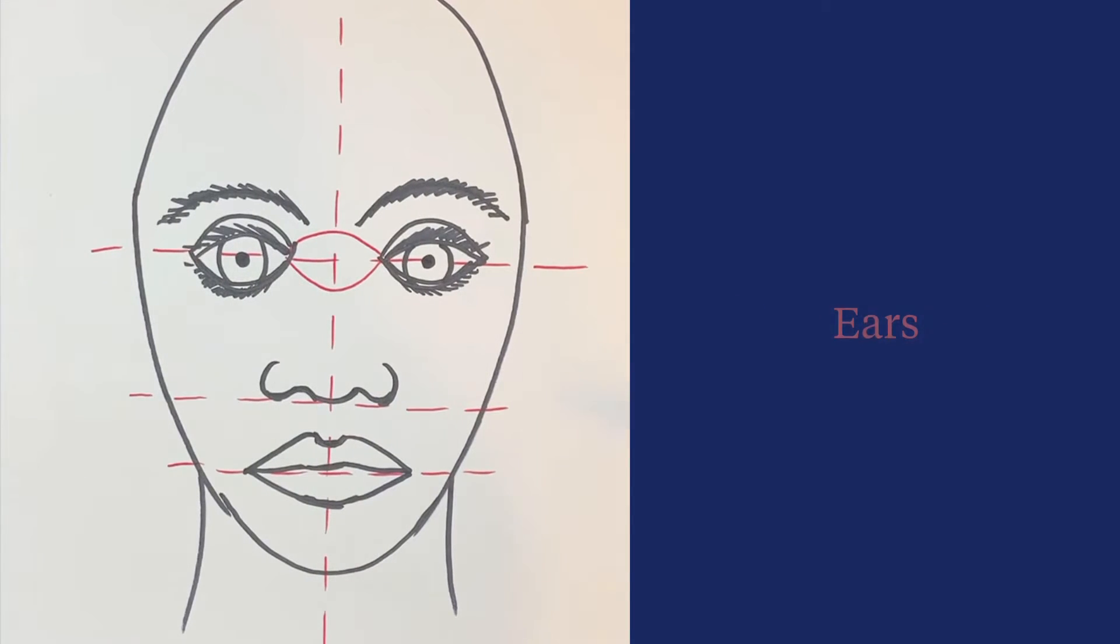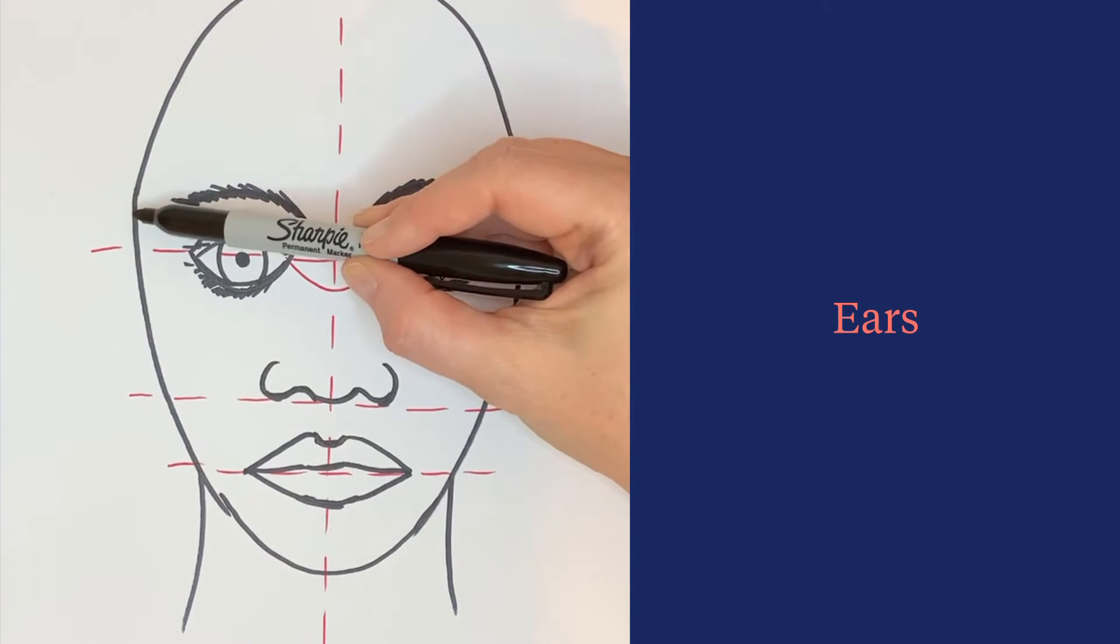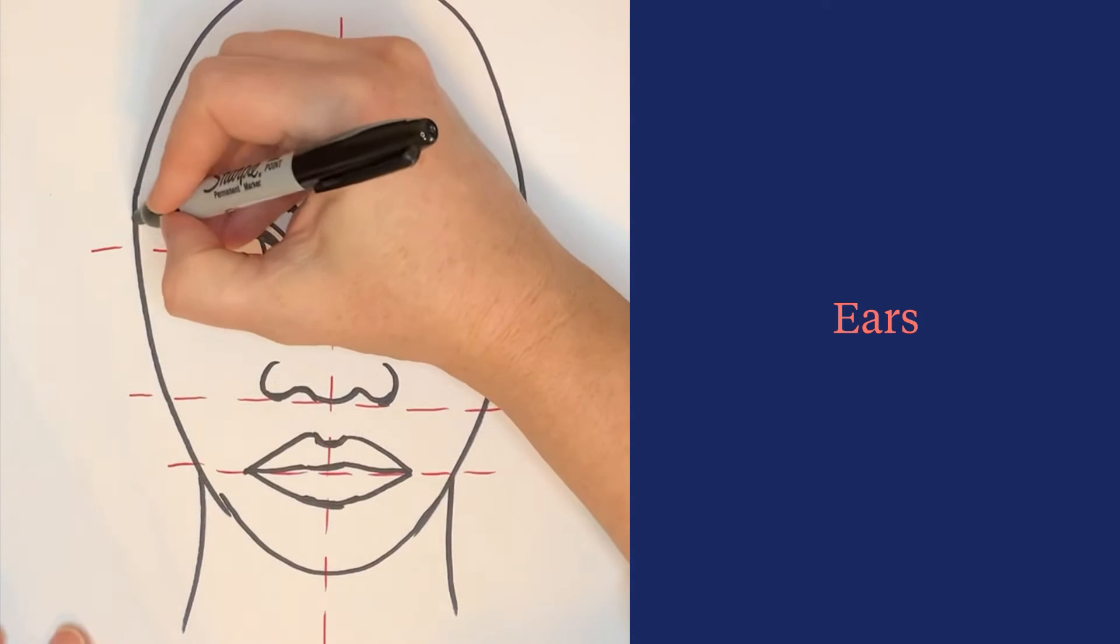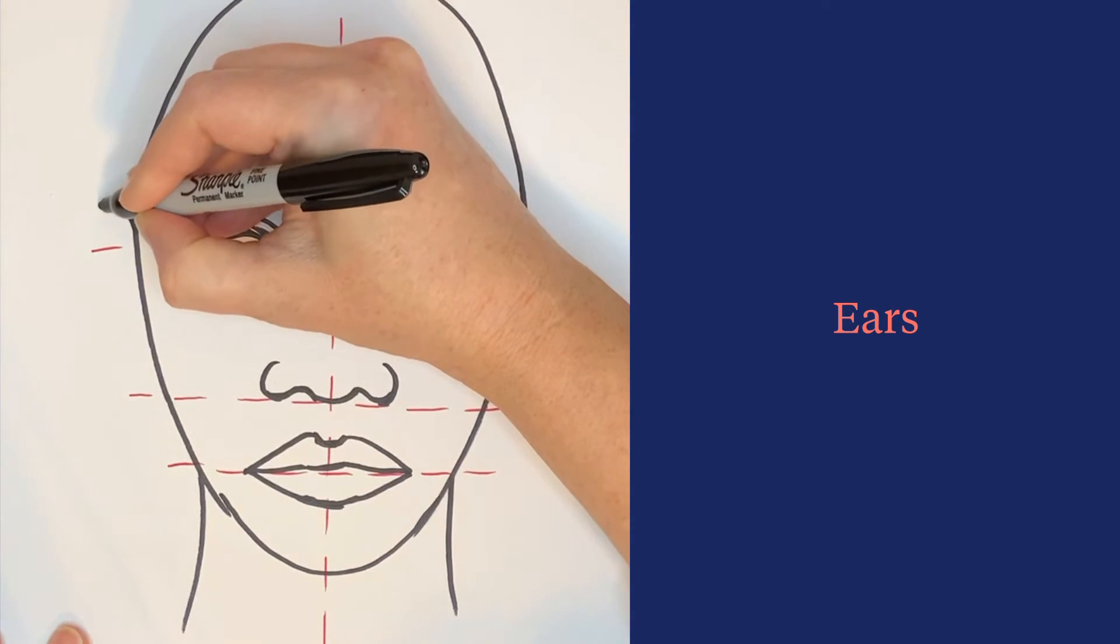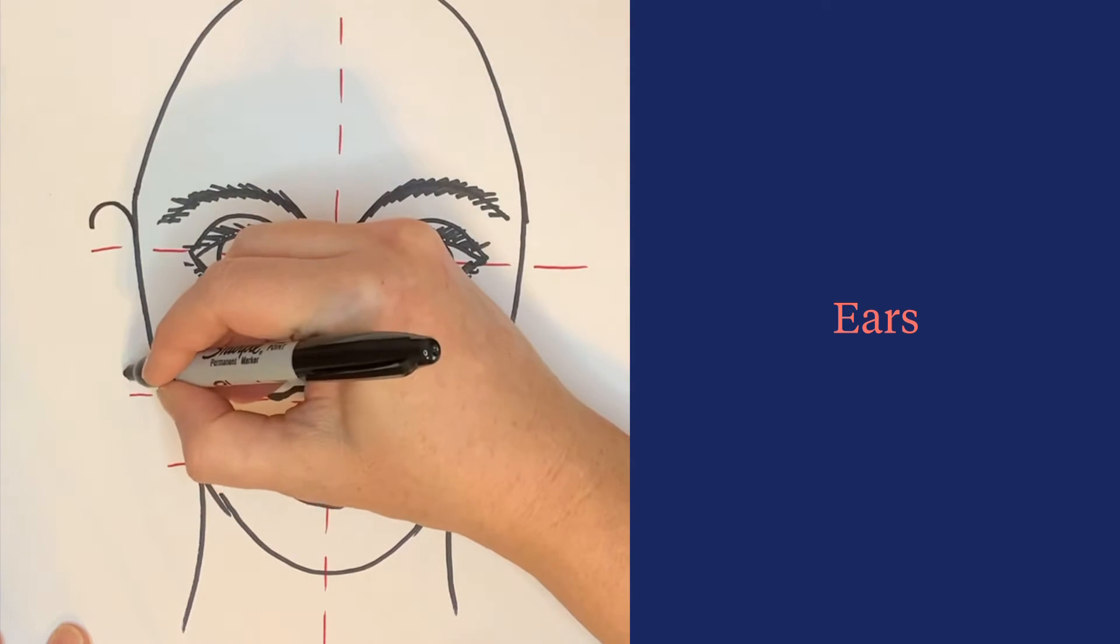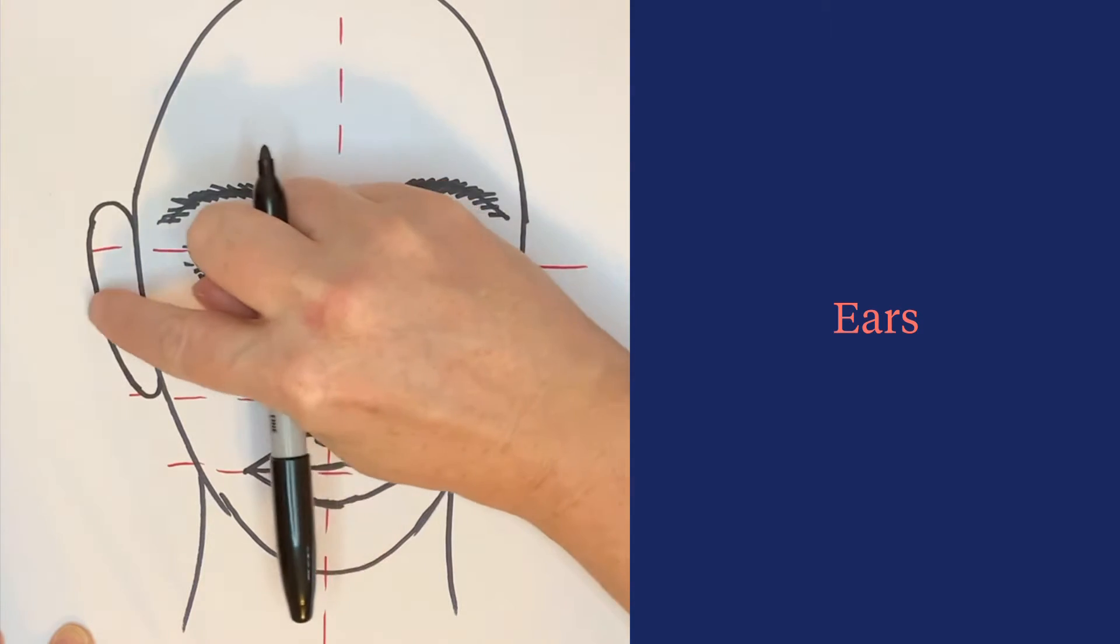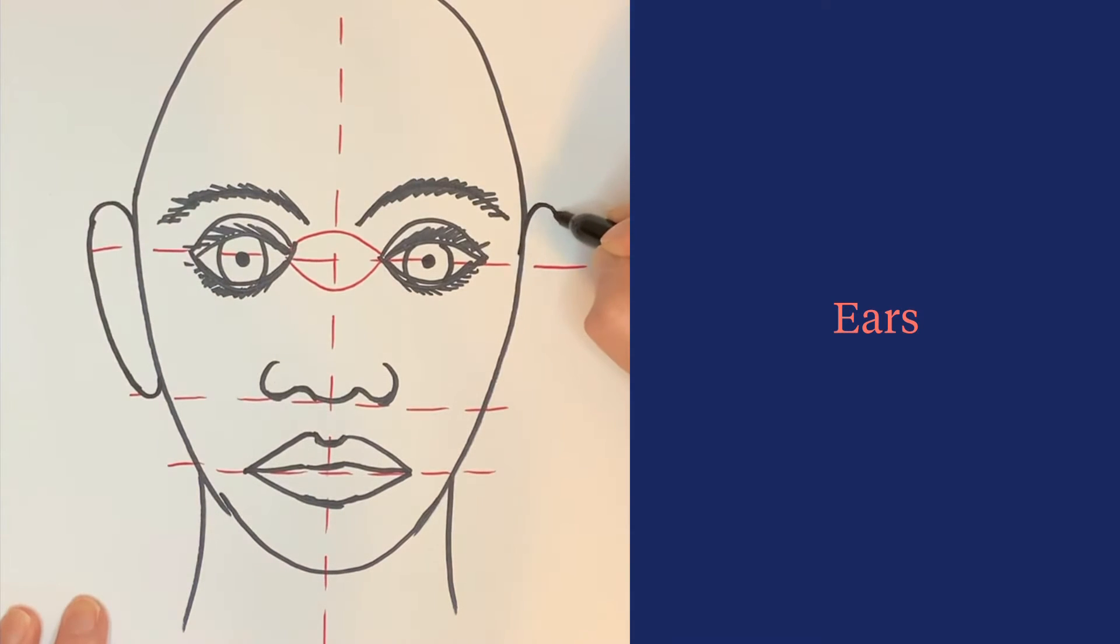The ears might seem really long, but they actually line up with your eyebrows and the bottom of your nose. At the top, put a small curve, and at the bottom, put a small curve. Connect those two lines and do the same thing on both sides. Your ears don't stick out very far from this angle.